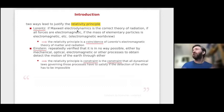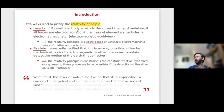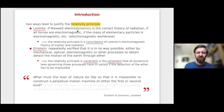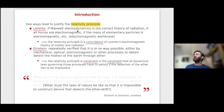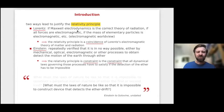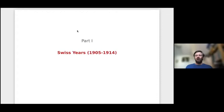Einstein's relativity principle is a constraint: all dynamical laws, of whatever kind — electromagnetic or yet unknown — have to satisfy it if the detection of the ether drift is to be impossible. This is roughly what Einstein wrote in an undated letter to his friend Solovine: 'What must the laws of nature be like so that it is impossible to construct a perpetual motion machine of either the first or the second kind?' The same question applies to relativity theory: what must the laws of nature be like so that it is impossible to construct a device that detects absolute drift?